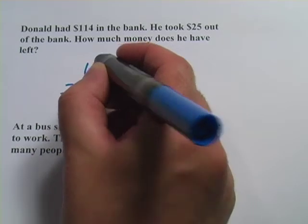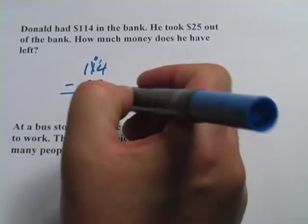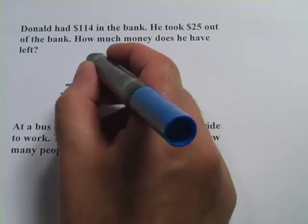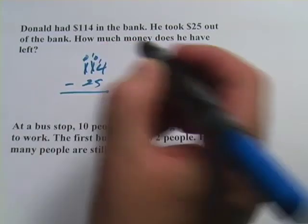4 minus 5, I have to borrow. That would make this into a zero, and I would have to borrow again. So put the one up there. That becomes a zero then.